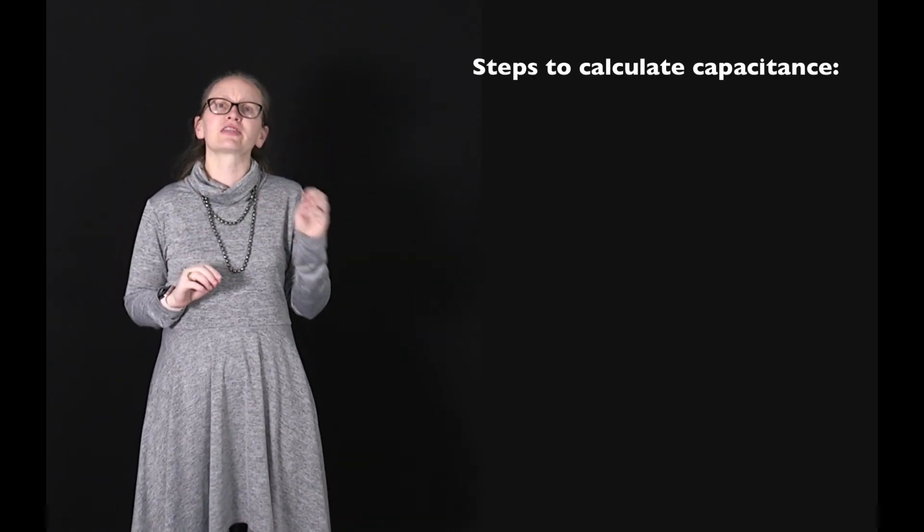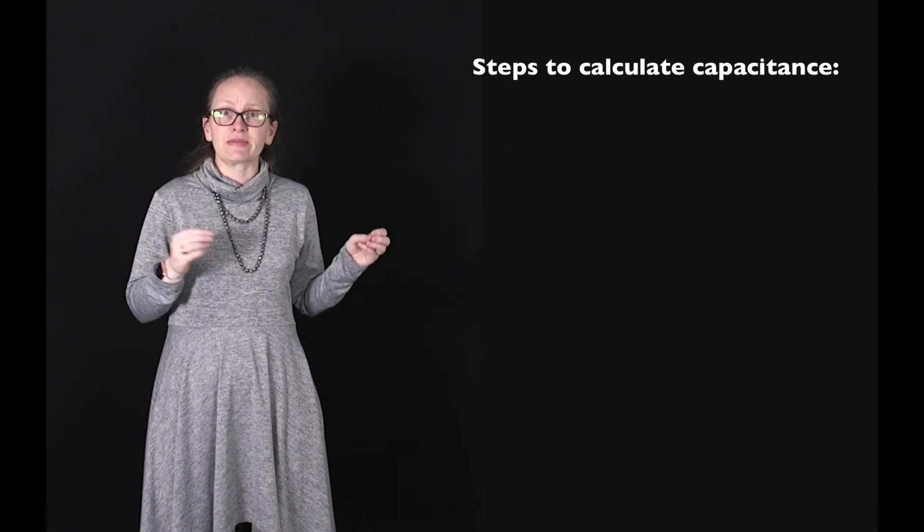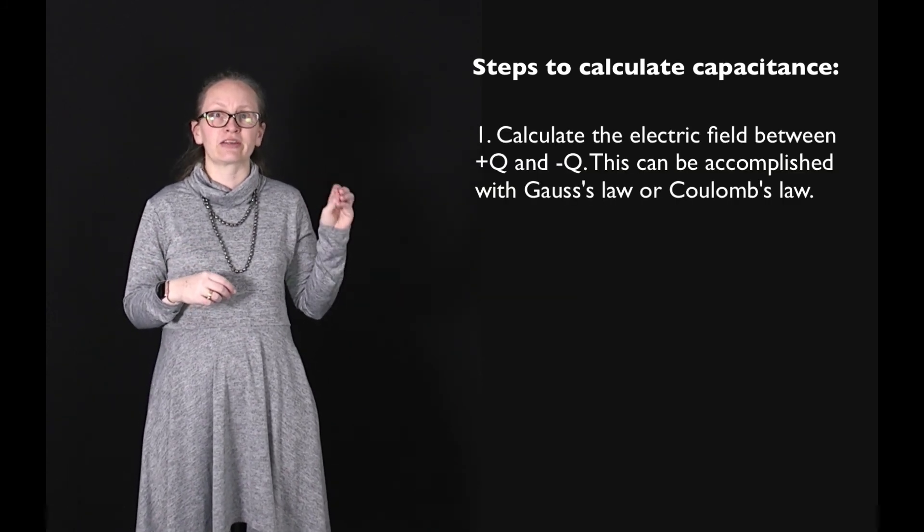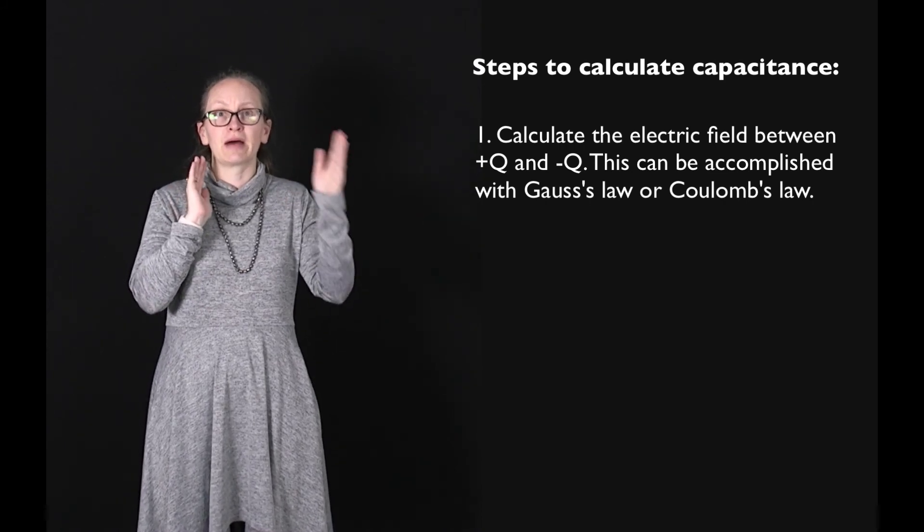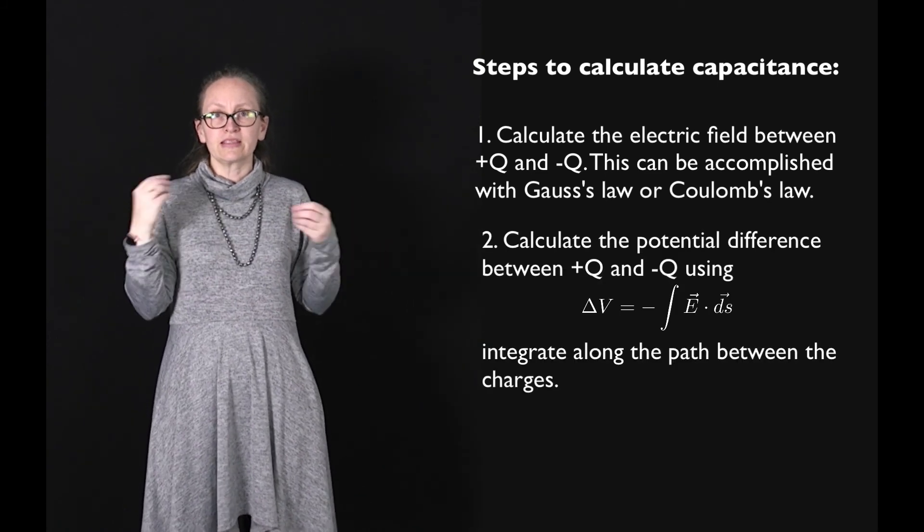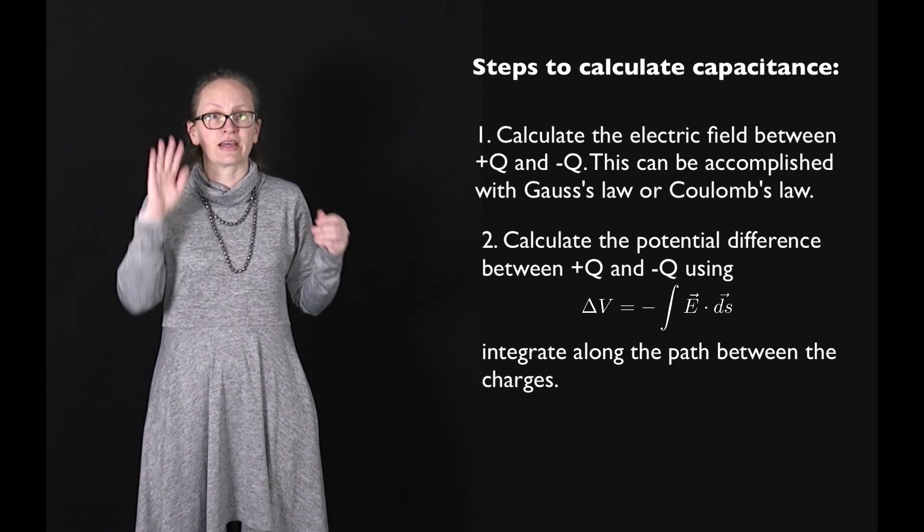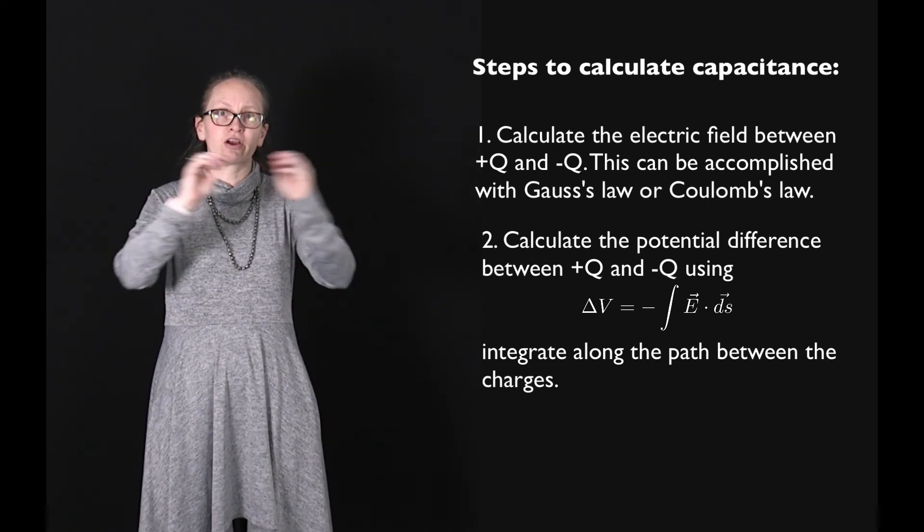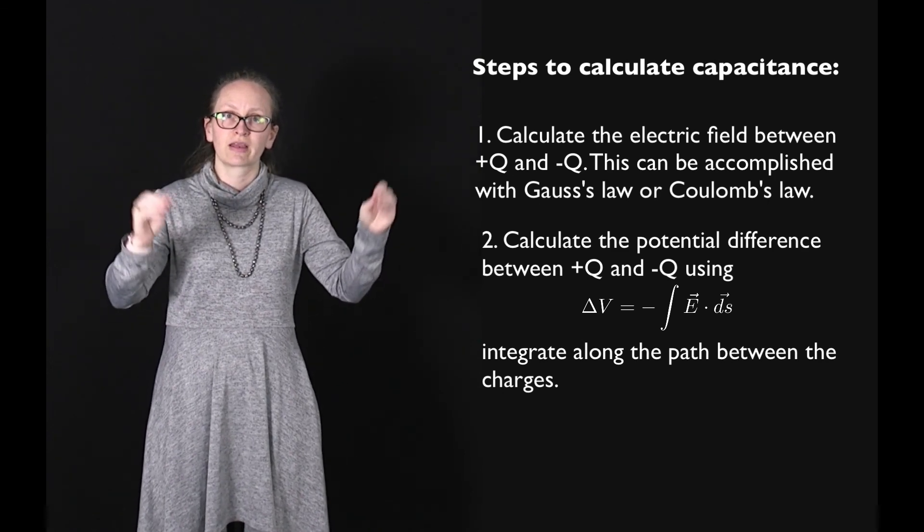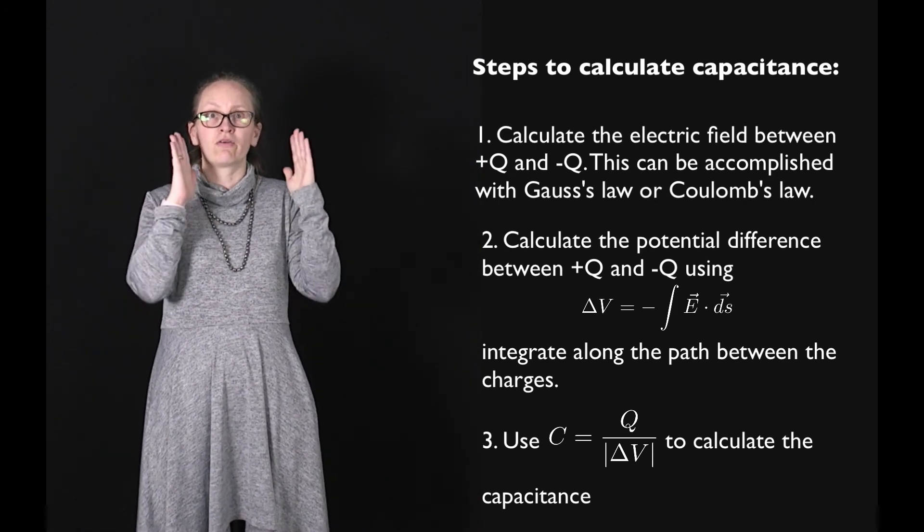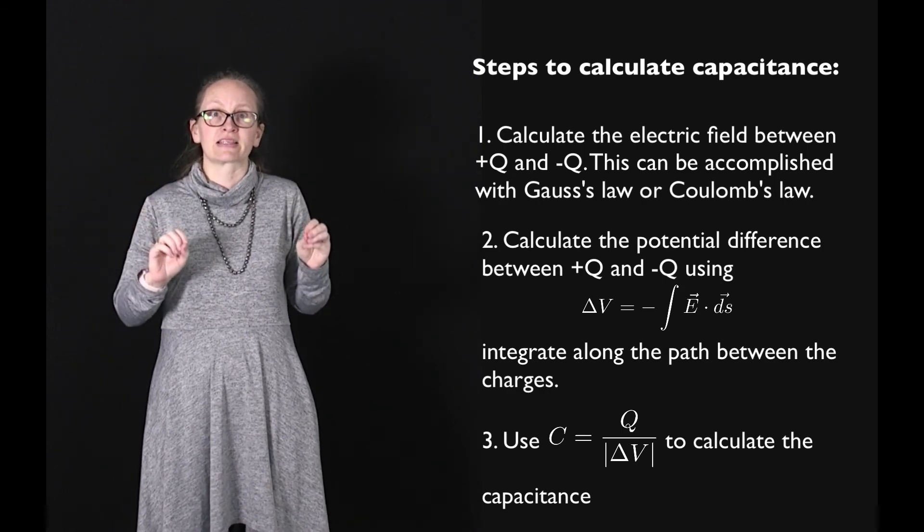When we came up with our expression of the capacitance of the parallel plate capacitor, there were several steps that we followed. We follow these same steps if we want to work out the capacitance of other charge distributions as well. The first thing we did was calculate the electric field between our plus Q and minus Q charge. This can be done using methods such as Gauss's law or Coulomb's law. Next, we calculated the potential difference using the equation that delta V is equal to minus the integral of E dot ds. Here we were integrating over the distance between the two charge distributions. Then finally, we used our equation for capacitance C is equal to Q over the absolute value of delta V to calculate the capacitance of this distribution.